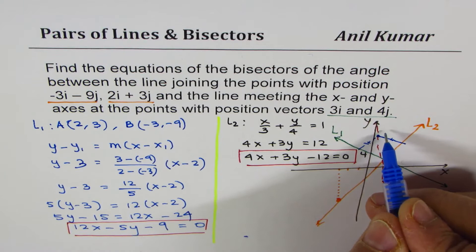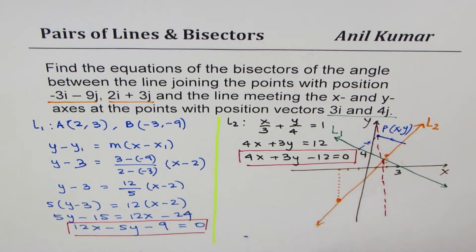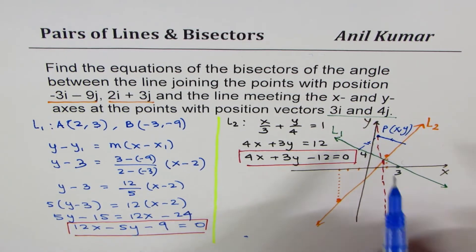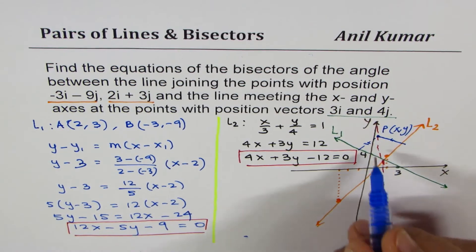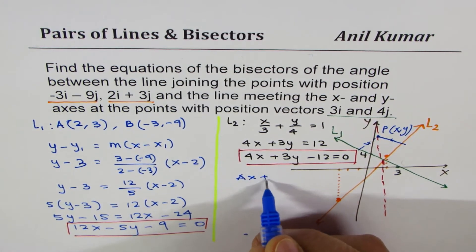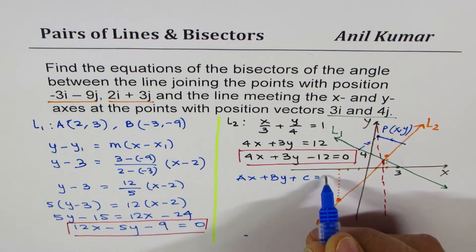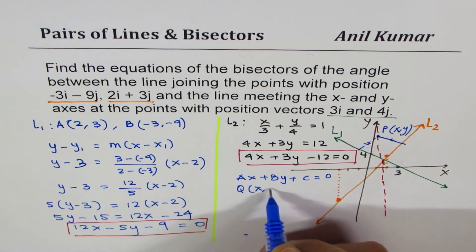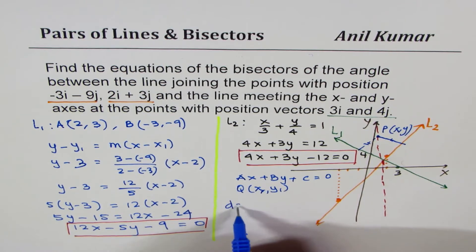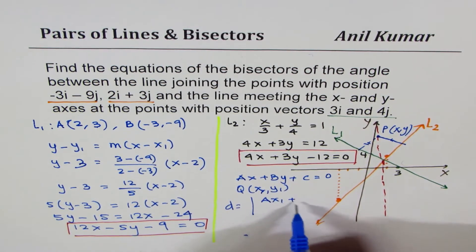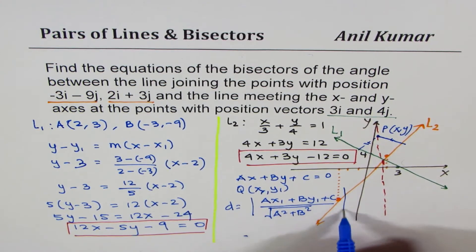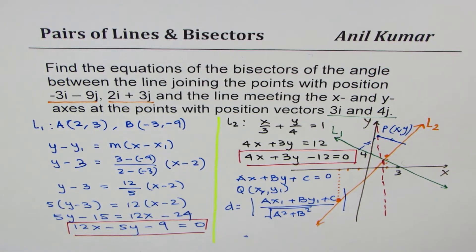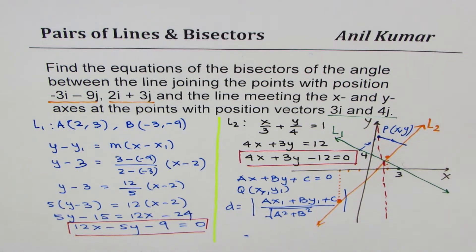If I have a general point P with coordinates (x, y), its distance from both lines should be the same. The formula for the perpendicular distance from a point (x1, y1) to a line ax plus by plus c equals 0 is the absolute value of ax1 plus by1 plus c, divided by the square root of a squared plus b squared. We will equate both distances to find the answer.